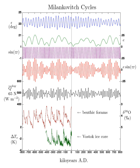Milankovitch cycles describe the collective effects of changes in the Earth's movements on its climate over thousands of years. The term is named for Serbian geophysicist and astronomer Milutin Milankovitch. In the 1920s, he hypothesized that variations in eccentricity, axial tilt, and precession of the Earth's orbit resulted in cyclical variation in the solar radiation reaching the Earth, and that this orbital forcing strongly influenced climatic patterns on Earth.